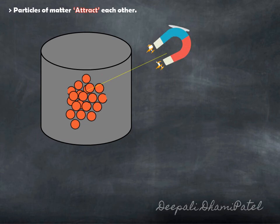So, did you know the characteristics of this particle now? Particle is very very small. Particle has space between each other. Particles are continuously moving and particles attract each other.